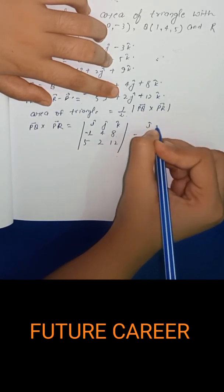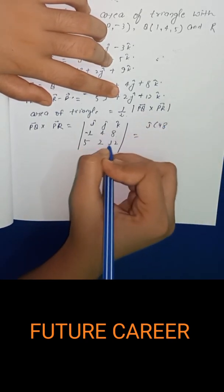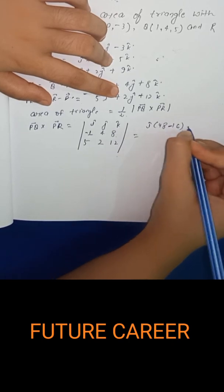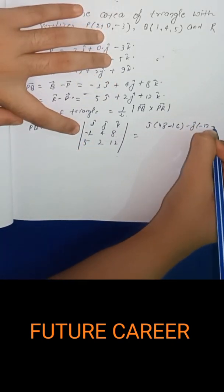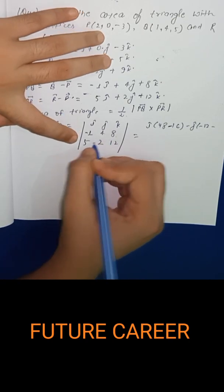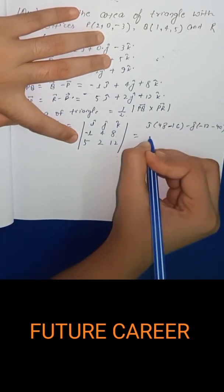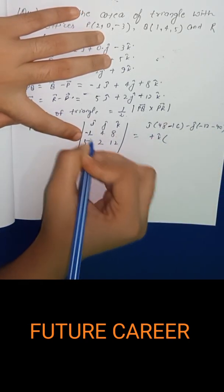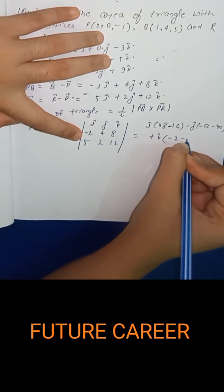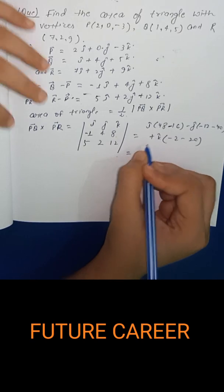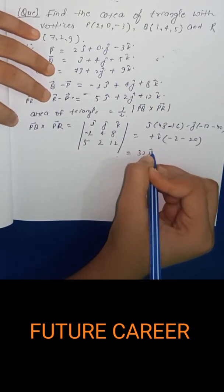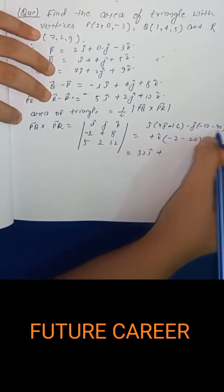Which equals to i cap into 48 minus 16, minus of j cap into minus 12 minus 40, plus k cap into minus 2 minus 20, which equals to 32i cap plus 52j cap minus 22k cap.